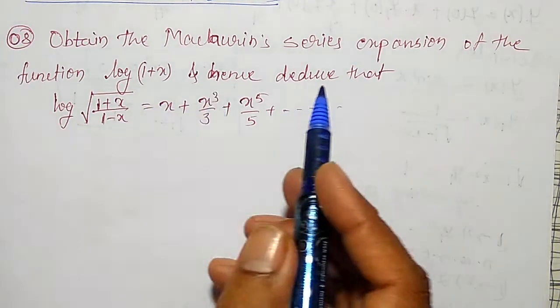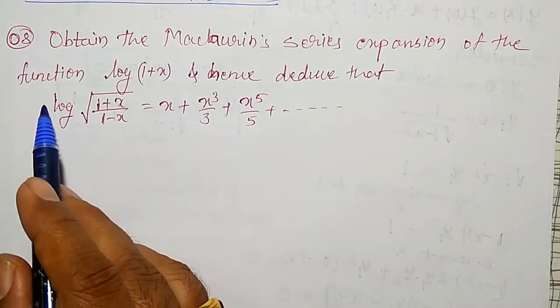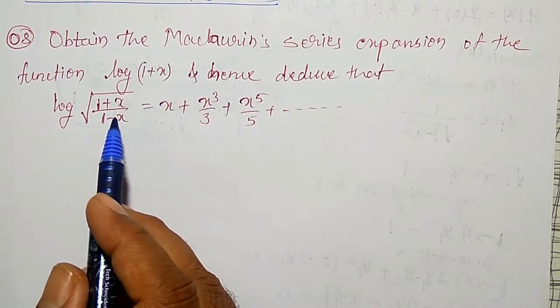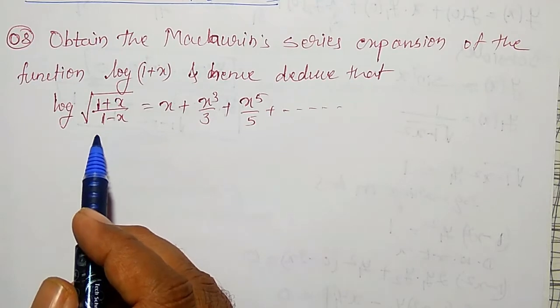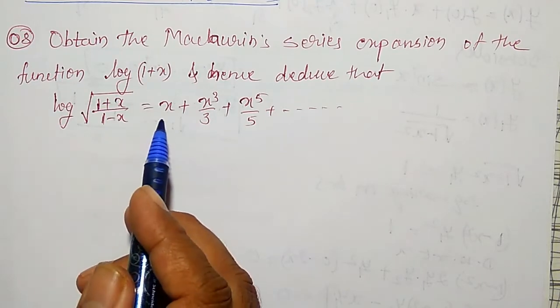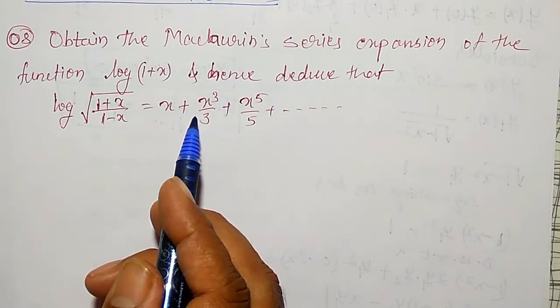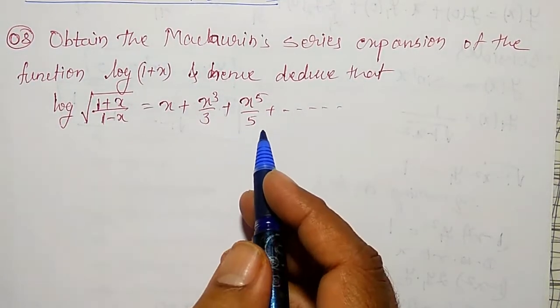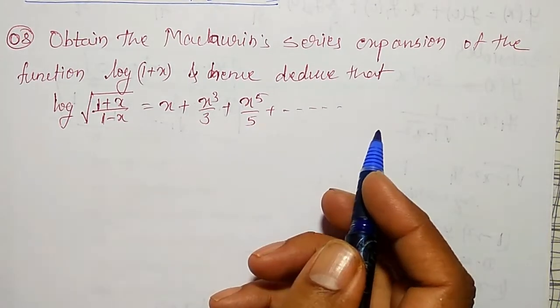Using that, I am going to prove that log of square root of (1 + x) divided by (1 - x) equals x plus x³/3 plus x⁵/5 and so on.